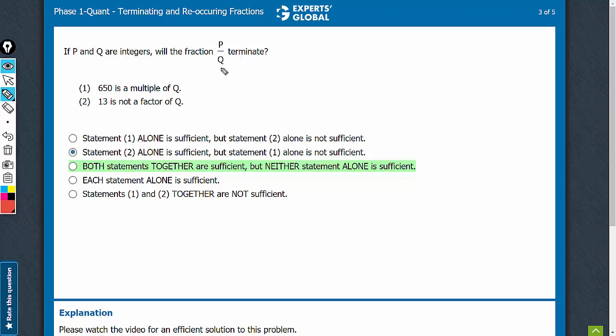The concept is that P upon Q will terminate if Q has only 5s and 2s as the prime factors. Look at statement 1. 650 is a multiple of Q.